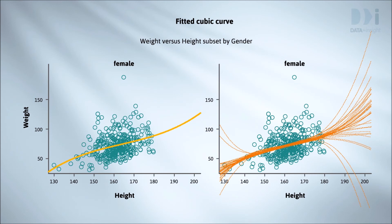In the left hand plot the trend is summarized using a smoother. The right hand plot is what we get from InSight when we ask for inference information for a scatter plot that has a trend curve drawn on it. So what are these other curves on the right hand plot? Well, 40 bootstrap resamples have been taken from the data and for each resample the same type of curve has been computed and added to the graph.